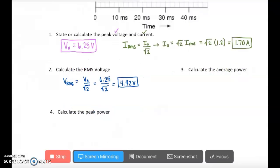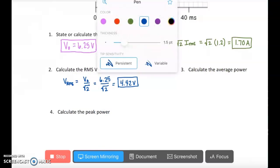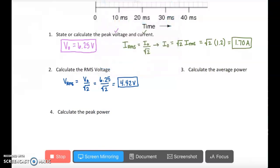We'll work across to number 3 then. Number 3 is asking us to calculate the average power. We sometimes do note this as a P with a line over it. You could also write P average. We know that P average is equal to IRMS, kind of like the average current, and VRMS.